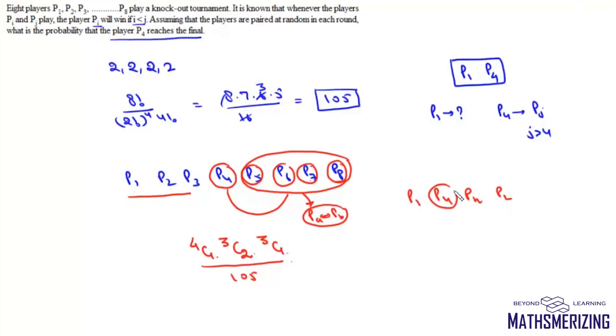Now P4 has to reach final. P4 will reach final if and only if this P4, it is paired with PL, which is lower value of P5, P6, P7, P8, which was there from the first round. So in this case, this P4, it has to be paired with PL and this can be done in 1 by 3 ways.